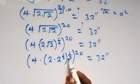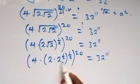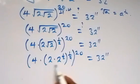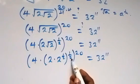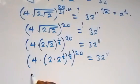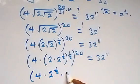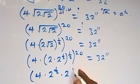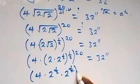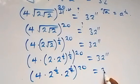We can multiply inside this bracket by half. That means we have: 4 times 2 raised to power half, times 2 raised to power half times half, which becomes 1 over 4, all raised to power 20. Is this equal to 32 raised to power 11?